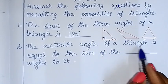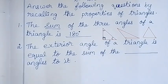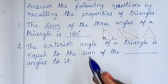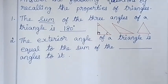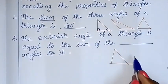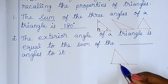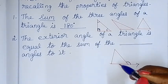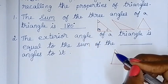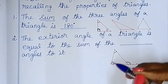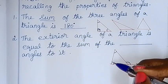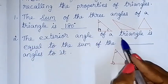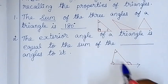The exterior angle of a triangle is equal to the sum of the two opposite interior angles of it. So for an exterior angle of a triangle, it is equal to the sum of the opposite angles of it.